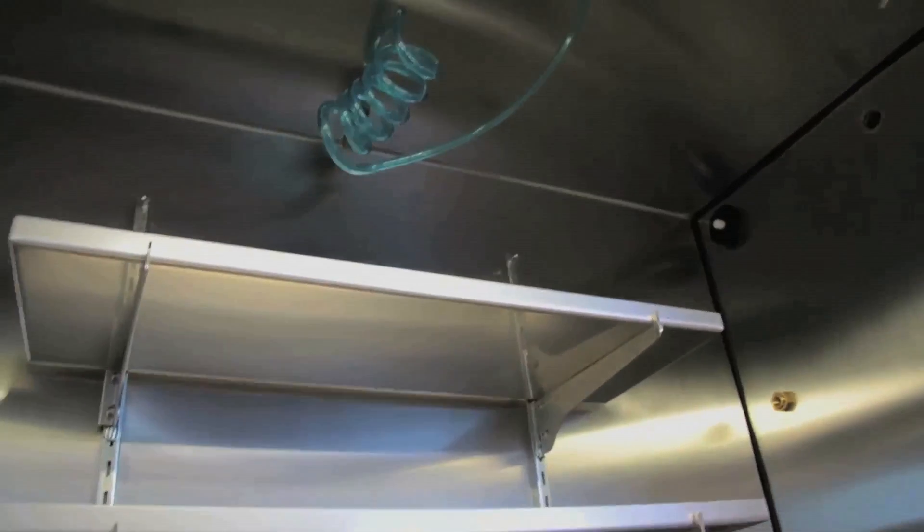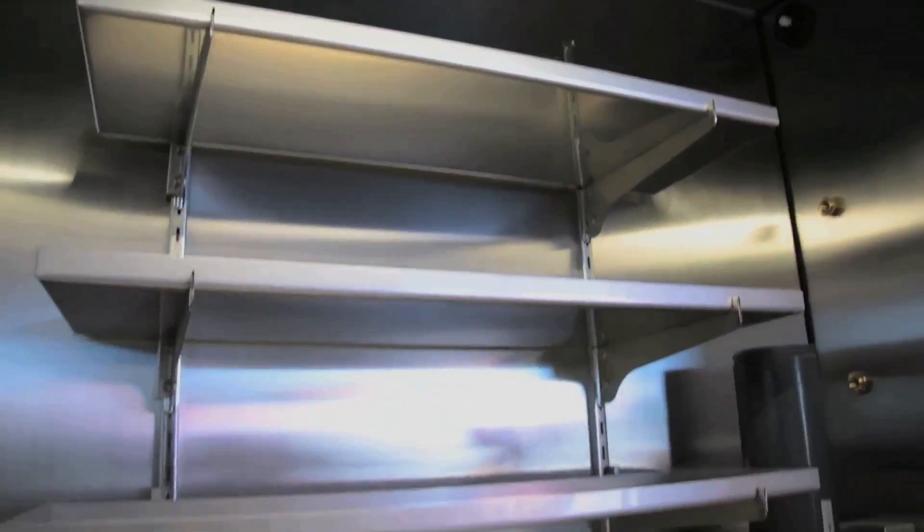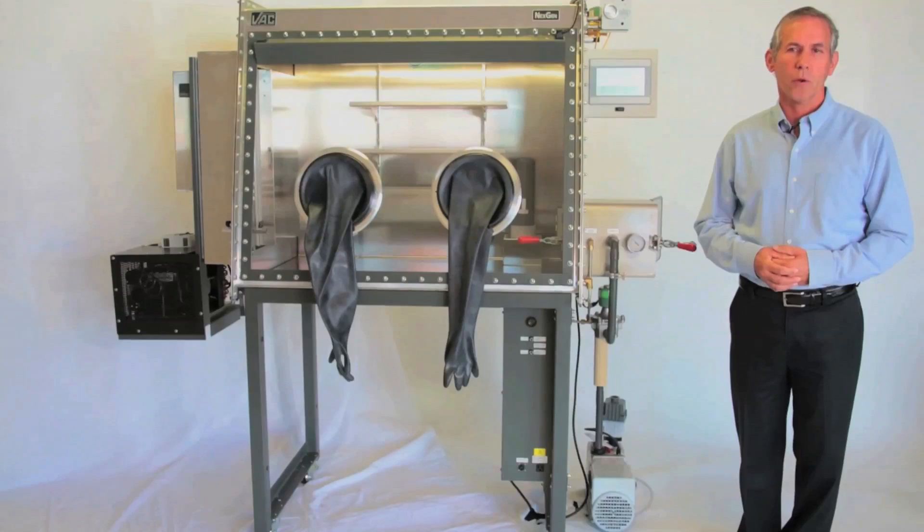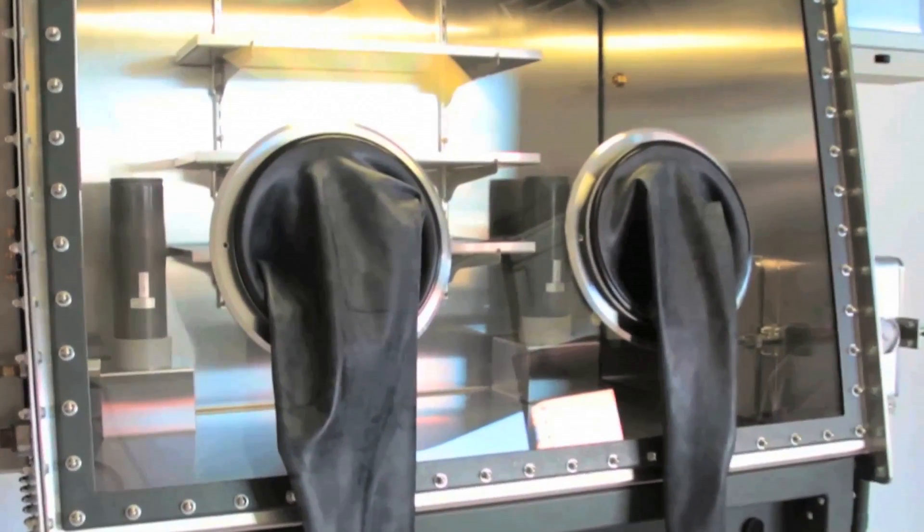The NextGen will maintain an inert atmosphere with less than 1 ppm oxygen and moisture. It uses two separate compact purifiers, one each for oxygen and moisture removal.